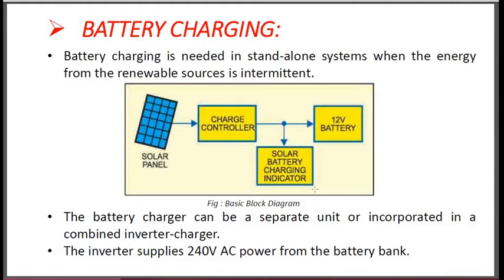This is the basic block diagram of the solar battery charging system. It mainly consists of Solar Panel, Charge Controller, 12V Battery Bank, and Solar Battery Charging Indicator. In the Solar Battery Charging Indicator, Voltage and Current Sensors are there. It will sense the voltage and current for the particular system and give the indication for the battery charging. The Solar Panel converts the solar radiation into electrical energy and this charge controller will give electrical energy to the battery for charging purpose, controlling the electrical energy for efficient utilization.